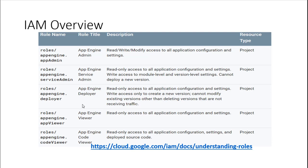App Engine has roles including App Engine Administrator, App Engine Service Admin, Deployer, Viewer, and Code Viewer, each with different levels of access. For example, you may want developers who are only testing to be able to deploy code but not have admin access to modify configuration variables. With the Deployer role, they can view but not modify configuration. This is where curated or predefined roles really come in.